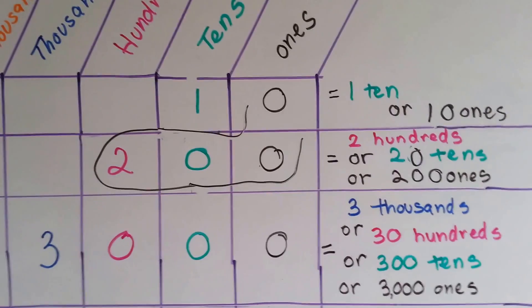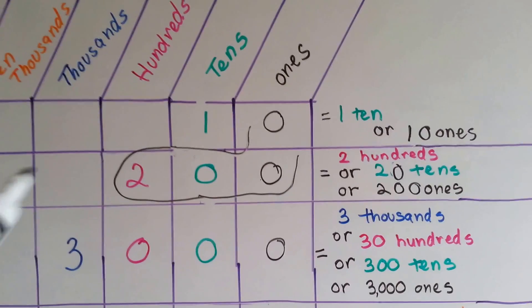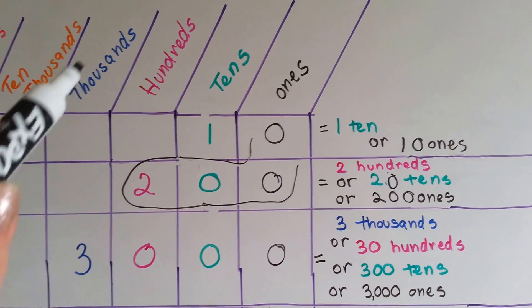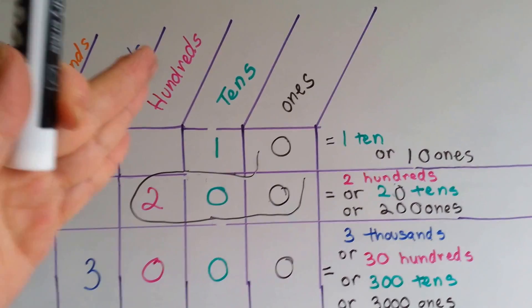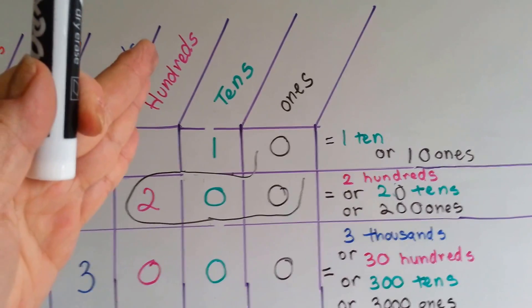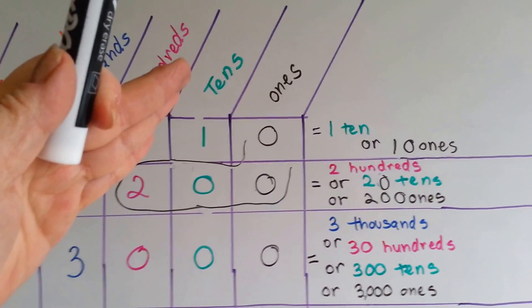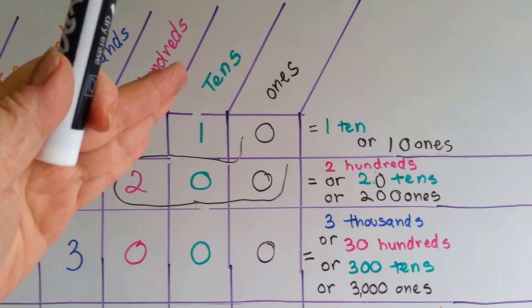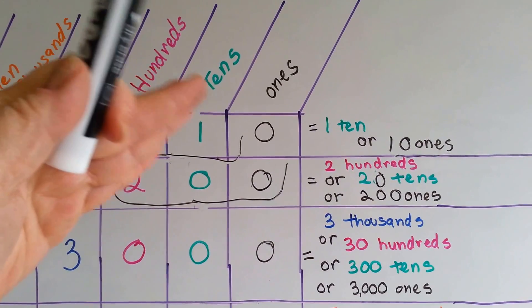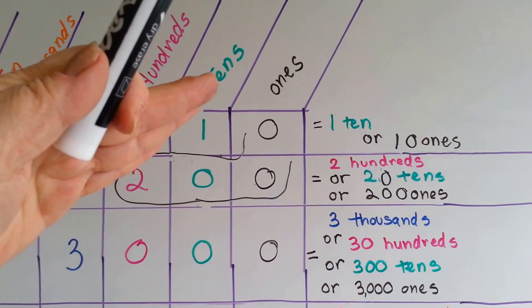The number three thousand — you could say it's three thousand, or you could say it's thirty hundreds. You could also say it's three hundred tens, or you could say it's three thousand ones.